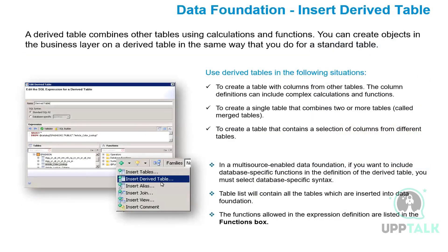We also have the option to insert a derived table. If we want some logic performed between two tables — for example, if required columns are in two tables and we want to achieve that logic in a single table — we can create a derived table by writing the required formula. We use derived tables in the following situations: to create a table with columns from other tables, or to create a single table that combines two or more tables, which is called a merged table.